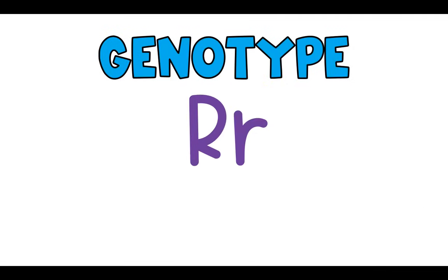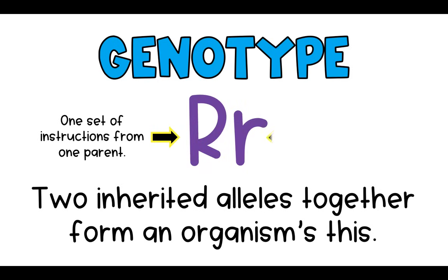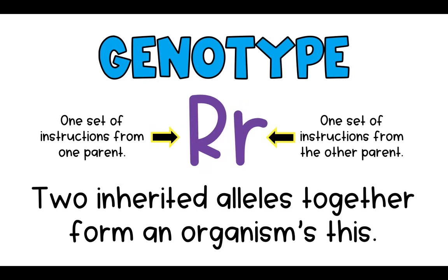The first thing we need to talk about is genotype. You have two sets of instructions for everything about you — one set from each parent. These two inherited alleles together form your genotype, which is the coding in your DNA that records what was passed down from your mom and your dad for a given characteristic like height.